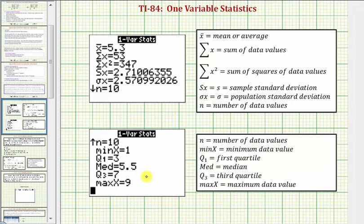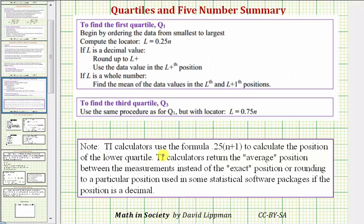It's important to note that there are several methods for determining the first and third quartiles. The TI-84 calculators use the formula 0.25 times the quantity n plus one to calculate the position of the lower quartile. For the upper quartile Q3, the formula is 0.75 times the quantity n plus one.